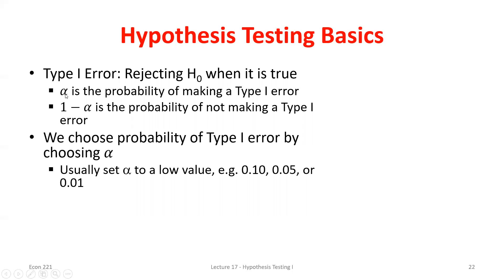For example, alpha of 0.05 means we make Type 1 errors about 5% of the time, which means 95% of the time we're not making a Type 1 error — that's 95% confidence. The three significance levels — 0.1, 0.05, 0.01 — correspond to 10%, 5%, and 1% significance, which means 90%, 95%, and 99% confidence that we're not making a Type 1 error. We can go back and forth between significance levels and confidence levels.